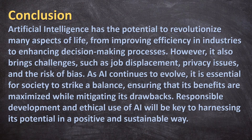Conclusion. Artificial intelligence has the potential to revolutionize many aspects of life, from improving efficiency in industries to enhancing decision-making processes. However, it also brings challenges such as job displacement, privacy issues, and the risk of bias. As AI continues to evolve, it is essential for society to strike a balance, ensuring that its benefits are maximized while mitigating its drawbacks. Responsible development and ethical use of AI will be key to harnessing its potential in a positive and sustainable way.